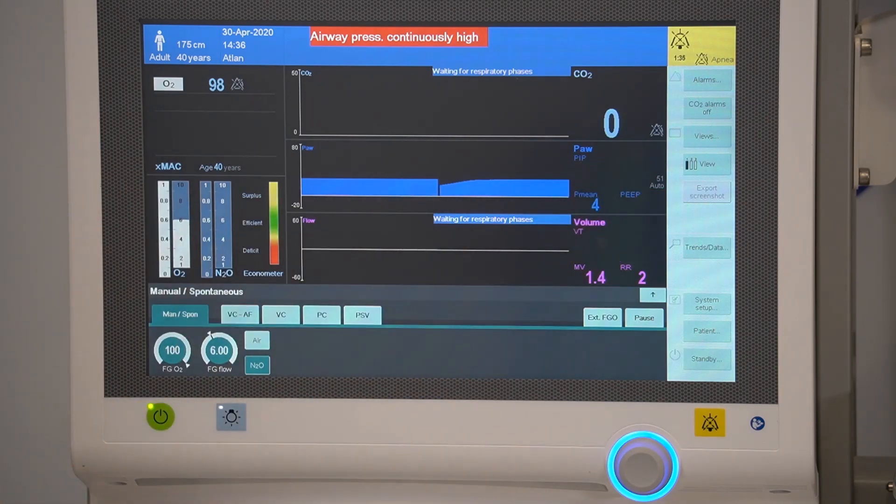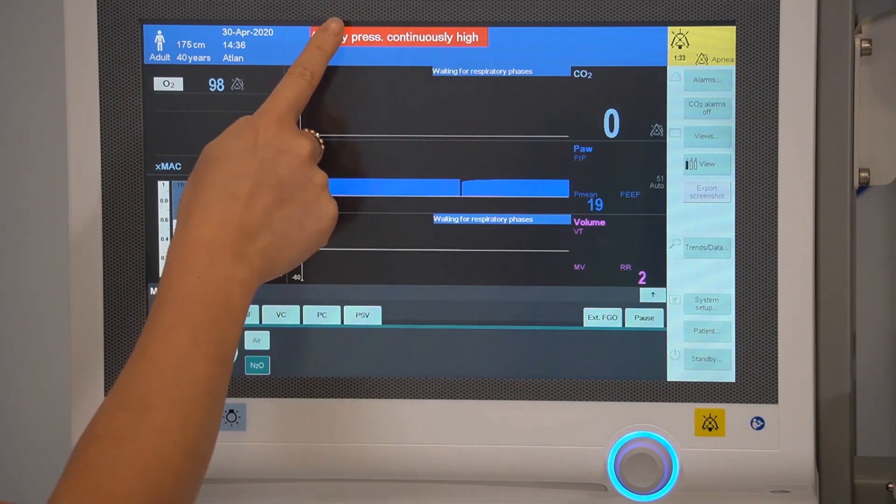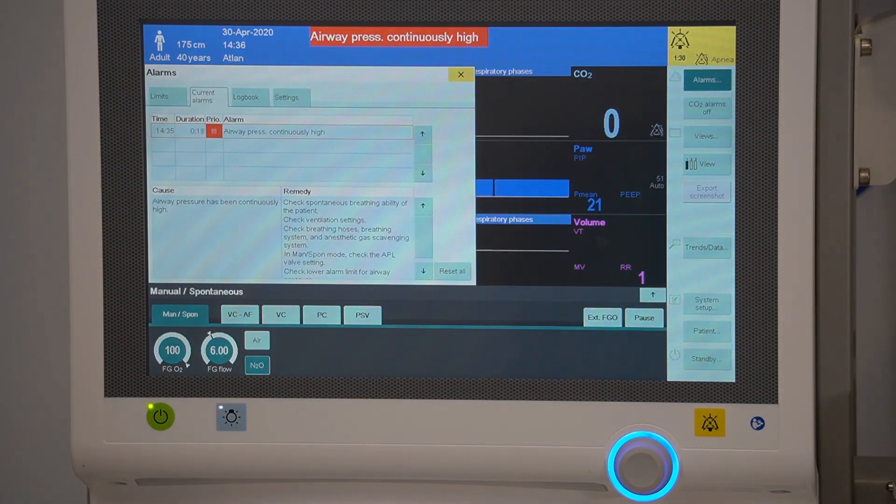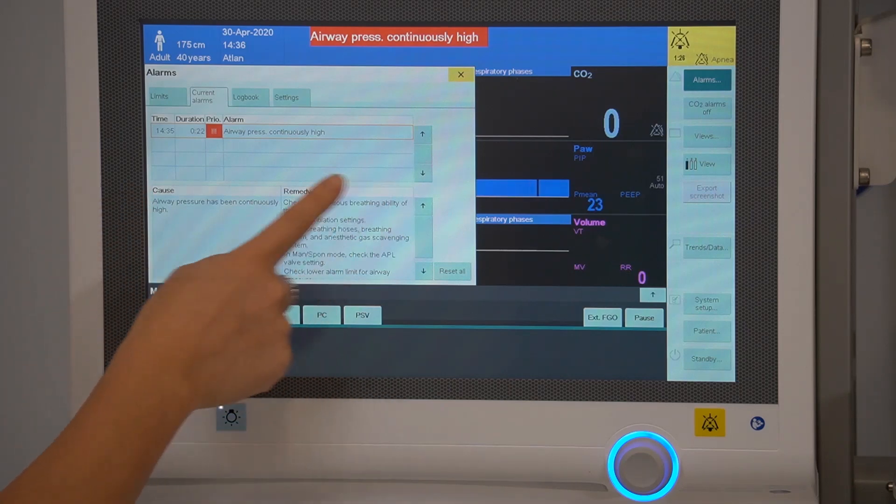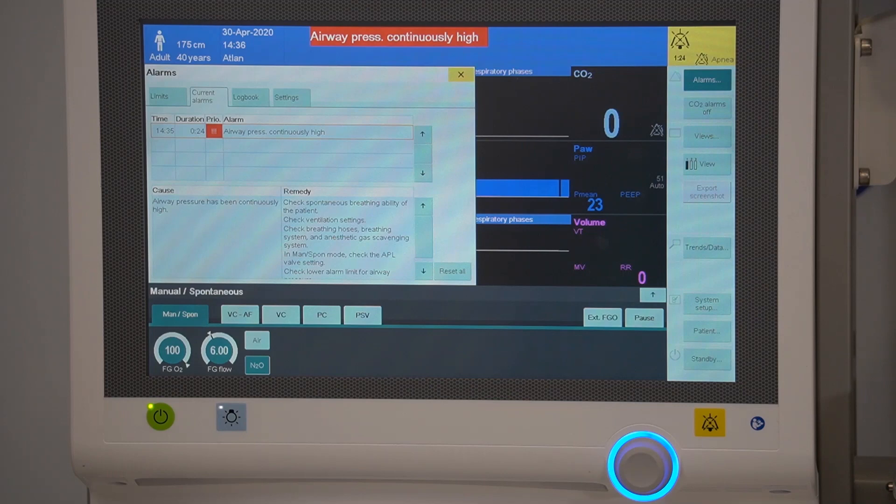To look at current alarms, you can select what is being displayed in the headline. This will give you a cause and a remedy to help troubleshoot the error.